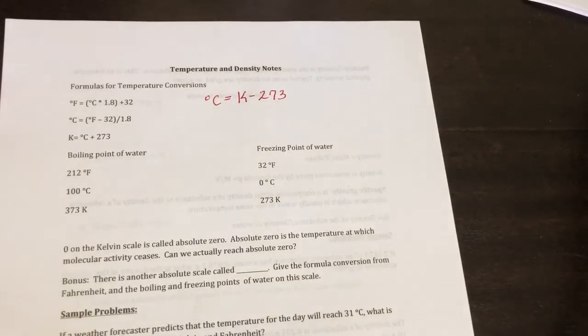Okay, so the Kelvin scale is based upon a principle called absolute zero. Absolute zero is the principle that all molecular motion stops at that temperature. It has never been reached. They've got within like 0.01 Kelvin, but they haven't actually reached it. Super, super difficult.